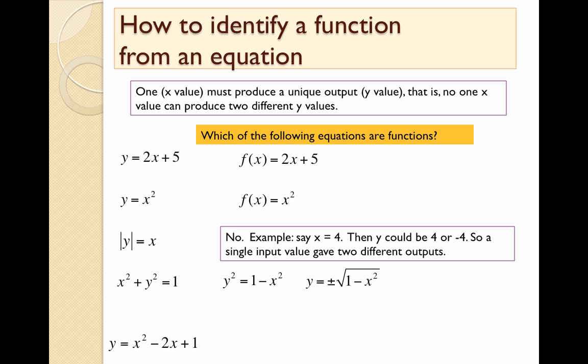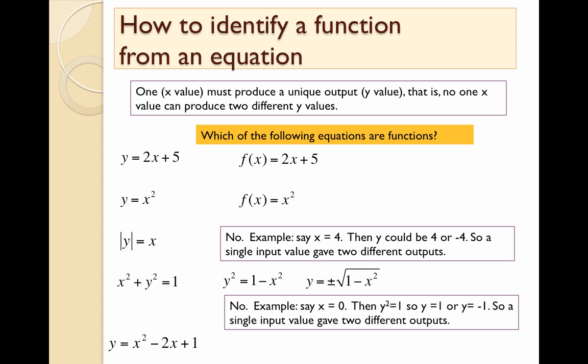Here's this next example: x squared plus y squared equals 1, which happens to be the equation of a circle. And what I've done there is I've gone ahead and solved that for y, so it looks a little bit easier to try to figure out whether you're going to get a unique output for each input. So think about it. Will each unique value of x that you put in there only give you one value for y? Well, it turns out no.